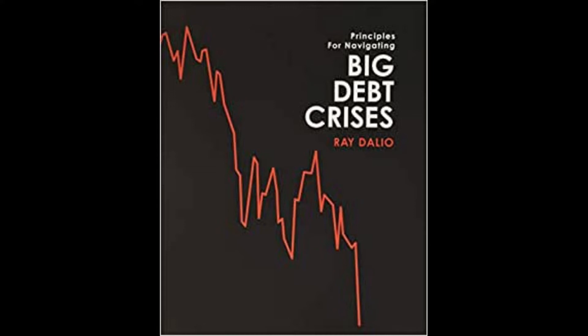If there is more demand for the currency and debt, that will push their prices up, which — all else being equal — will push inflation down and growth up, assuming the central bank keeps money and credit steady. When there is less demand, the reverse will happen. How much changing demand creates changes in the currency versus changes in interest rates will depend on how the central bank moves its levers. In times when money is flowing out of a currency, real interest rates need to rise less if real exchange rates fall more, and vice versa.